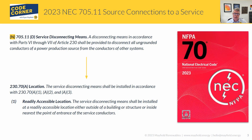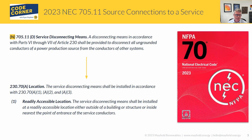Part 6 of Article 230 is service equipment disconnecting means. Reading through 230.70A, it talks about location: the disconnect needs to be in a readily accessible location, either outside the building or structure or inside at the nearest point of entrance for the service conductors. So what we're really left with is no code restriction on the length of those conductors. The disconnect just has to be in a readily accessible location and the overcurrent protection needs to be integral with or directly adjacent to that disconnect.